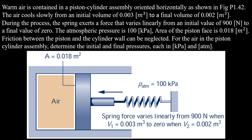Let's look at the main keywords to understand the problem and what it is asking us to find. The first keyword is warm air, the second is air cools, the third is initial, and the fourth is final. We are dealing with air where initially, at state one, the air was warm, and at the final state, state two, the air becomes cold.